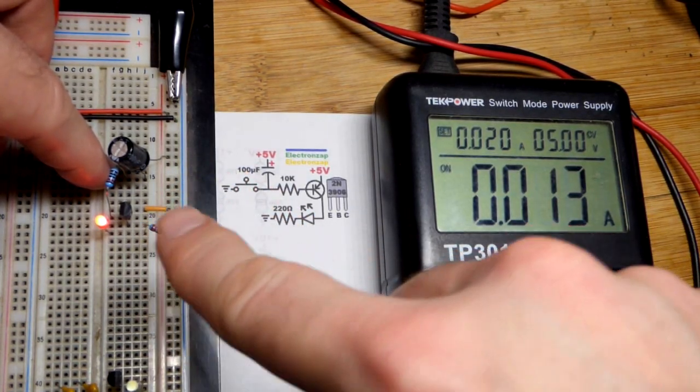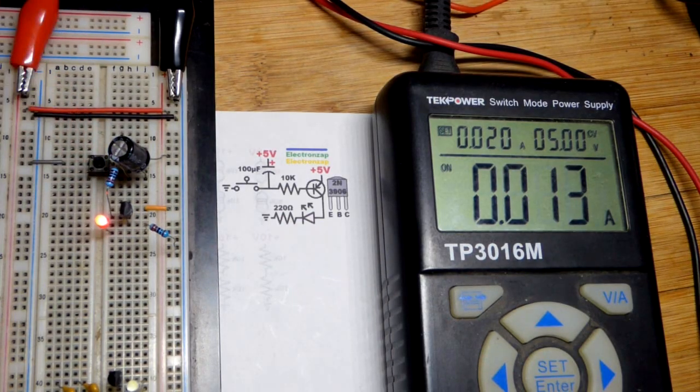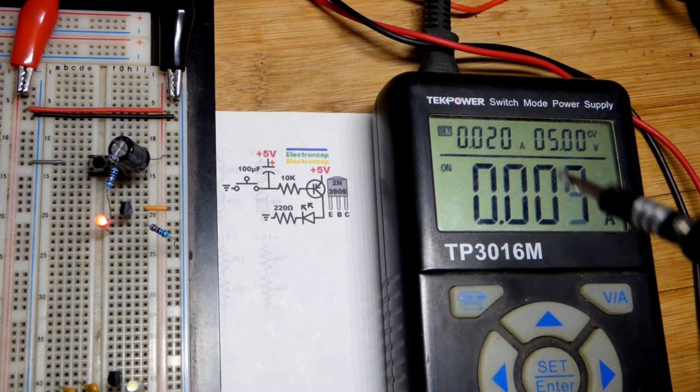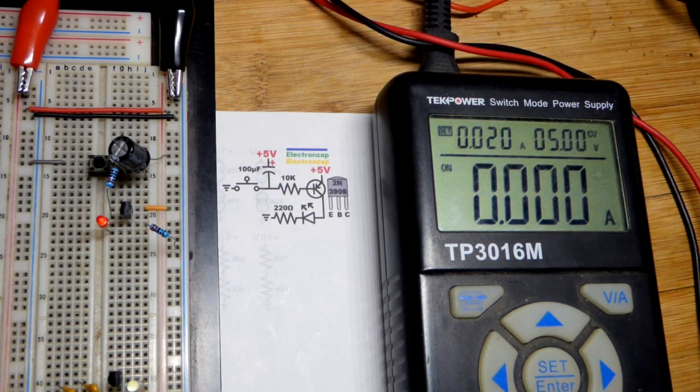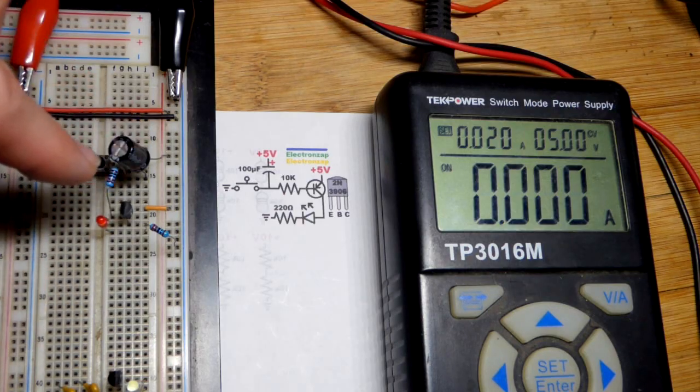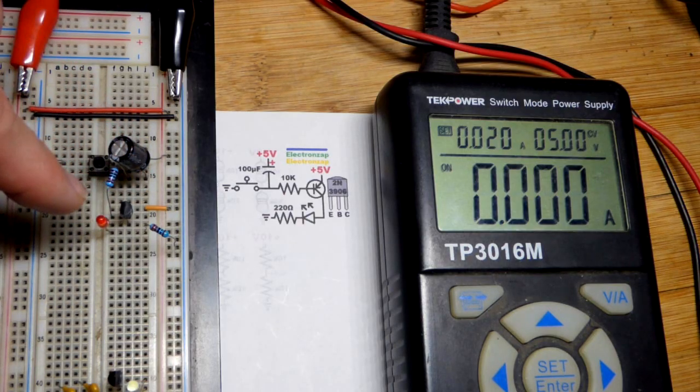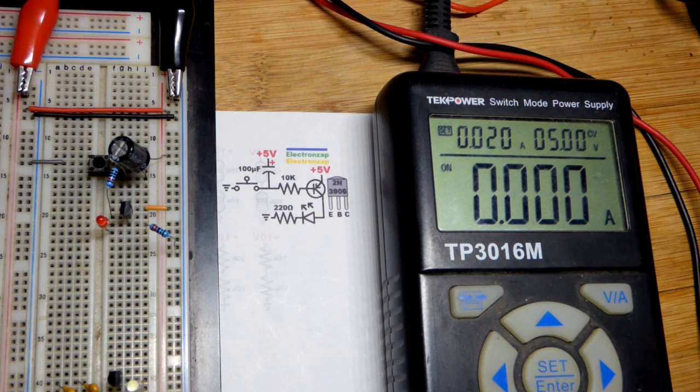This is saturated - transistor is not limiting the current, the load is. Once the current starts going down, that's when the transistor is limiting how much current. That's called the active region. And then once the transistor is off completely because there is no emitter to base current, that is called the cutoff region.